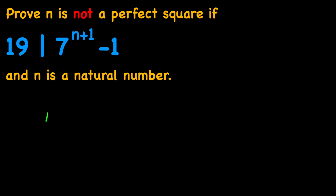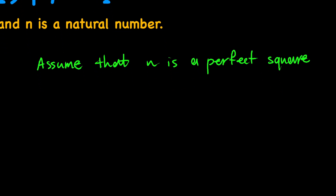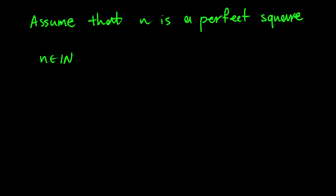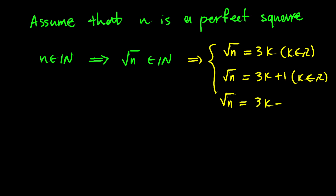I'm going to assume that n is a perfect square. Based on this, and based on the fact that n is a natural number, I can say that the square root of n has to be a natural number. Any natural number such as square root of n can be written as 3 times some integer, or 3 times some integer plus 1, or 3 times some integer plus 2. So we have three scenarios for square root of n.